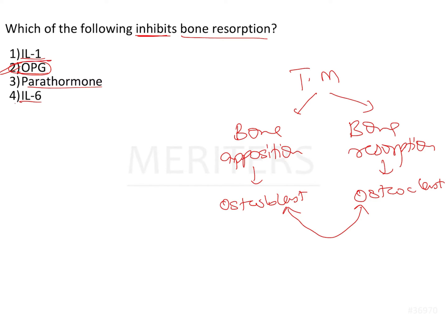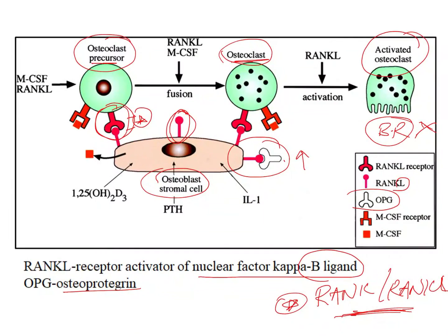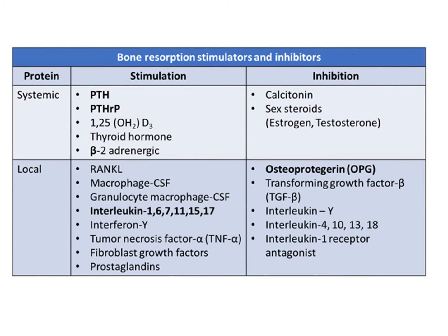The other factors — interleukin 1, interleukin 6, and parathyroid hormone — are inflammatory mediators and hormones that are actually going to stimulate bone resorption. This is a very important table that lists out those factors which stimulate bony resorption and those which inhibit bony resorption.